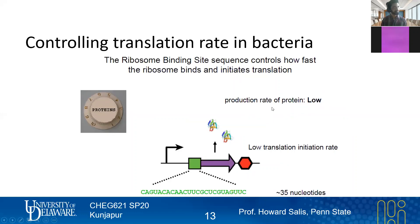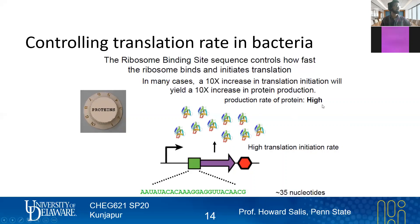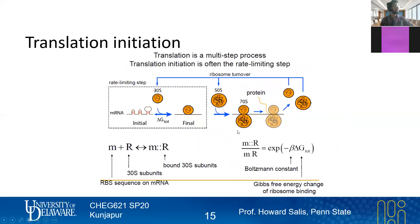Just thinking about this ribosome binding site again — it controls how fast the ribosome binds and initiates translation. This is just depicting a low production rate. It's represented as 35 nucleotides, and we'll talk about whether or not it's really 35 nucleotides. But it's illustrated as this dial or knob to be able to change the amount of protein. You can imagine a 10x increase in translation initiation giving you a 10x increase in protein production. So why translation initiation? At least among the steps of translation, translation initiation is the rate-limiting step.